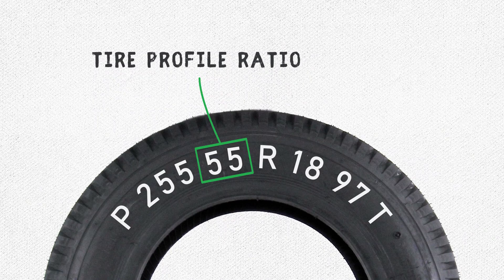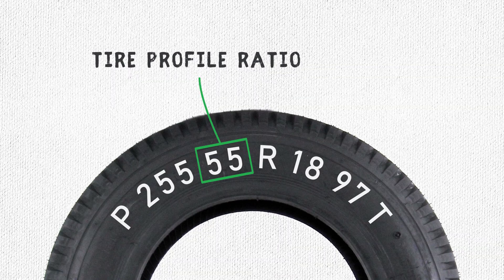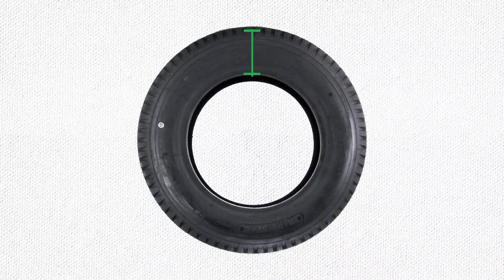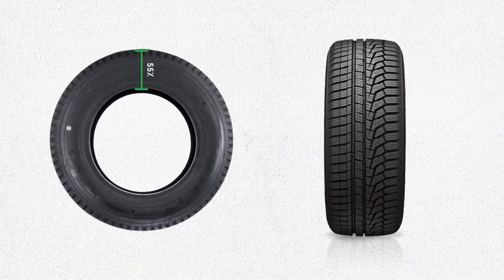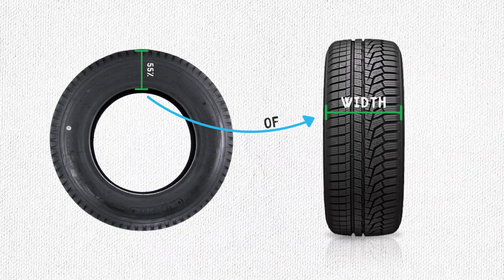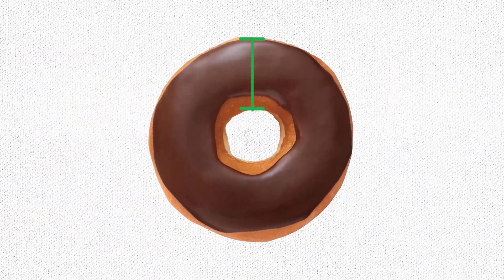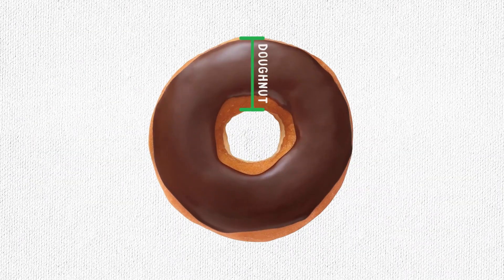The next number is the ratio, or the size of the tire profile. In this scenario, the height of the sidewalls is 55% of your tire's width. Nobody likes math though, so here's a simple example: the higher the ratio, the higher or taller the sidewall, and the more it looks like a donut.